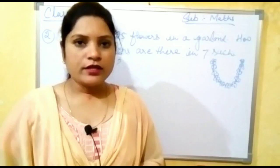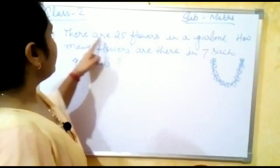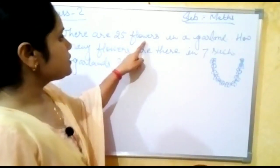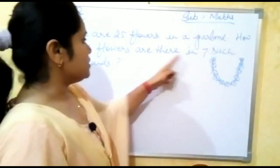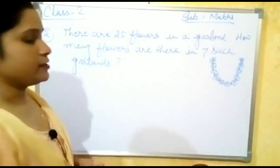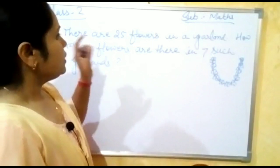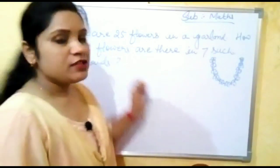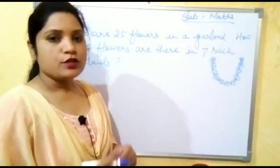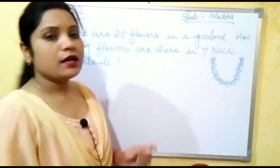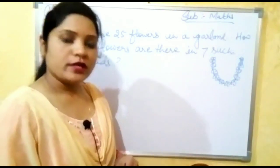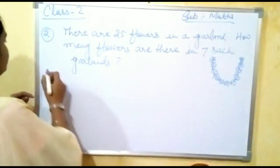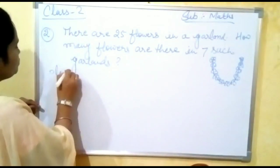Now let us see question number 2. There are 25 flowers in a garland. How many flowers are there in 7 such garlands? So in this question, in 1 garland there are 25 flowers. Let us do this question and write the solution.